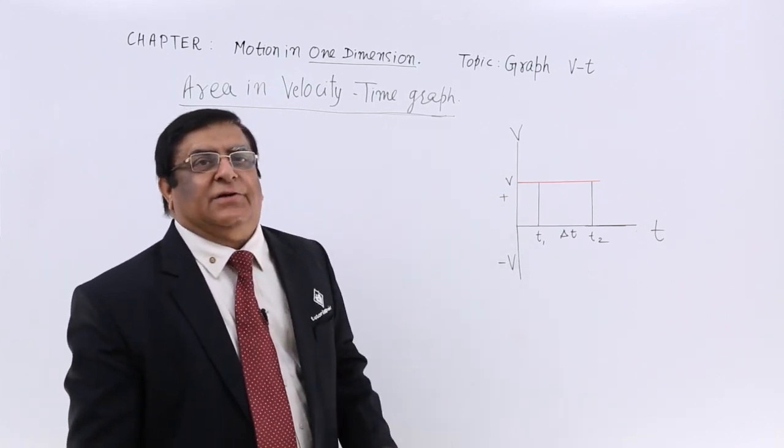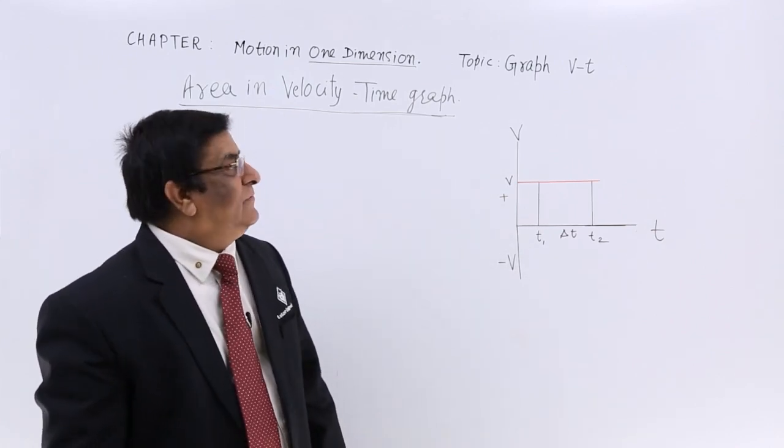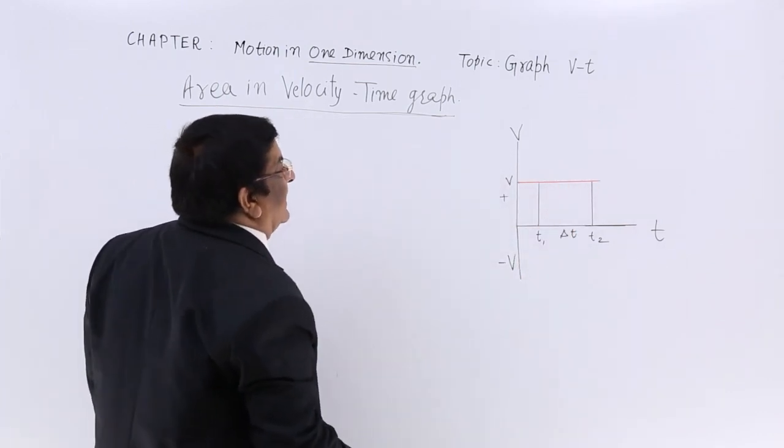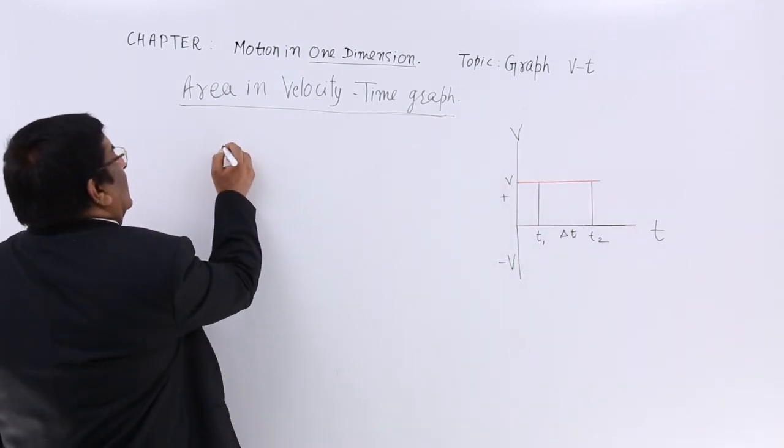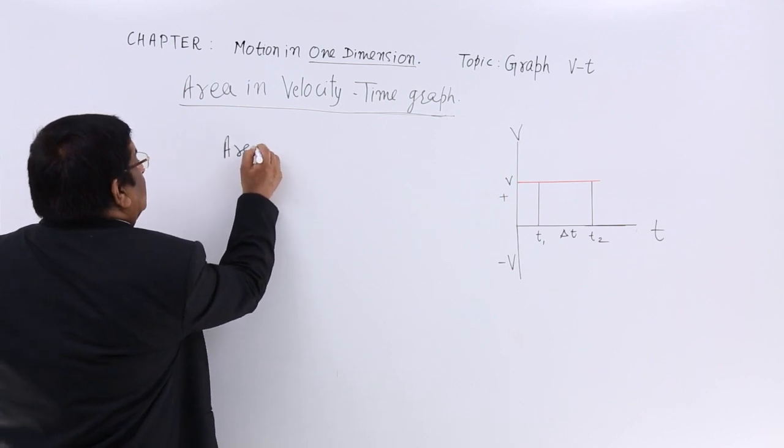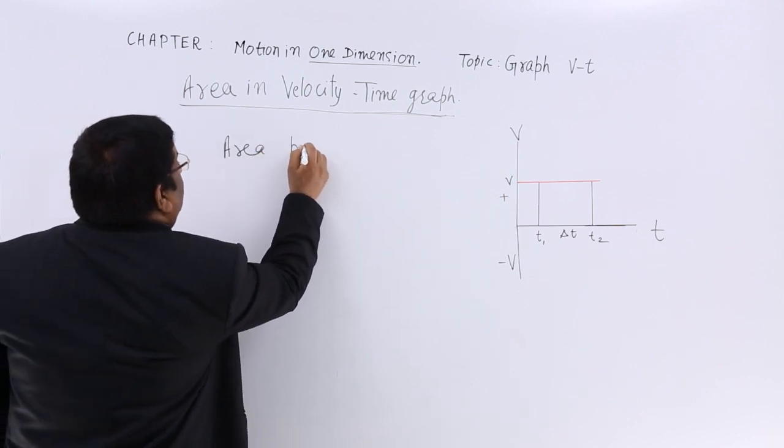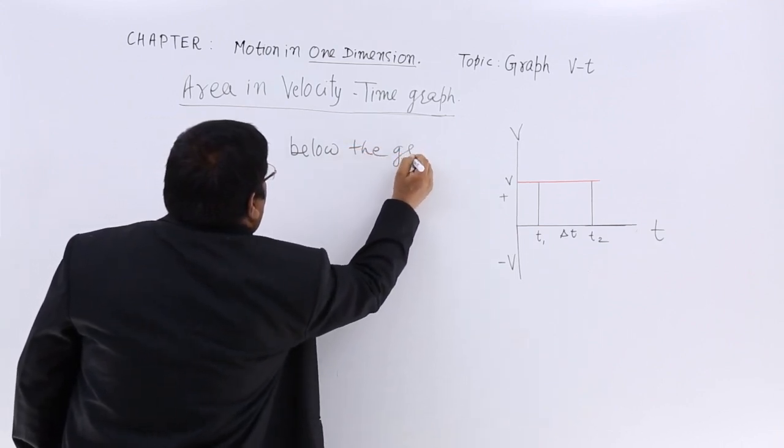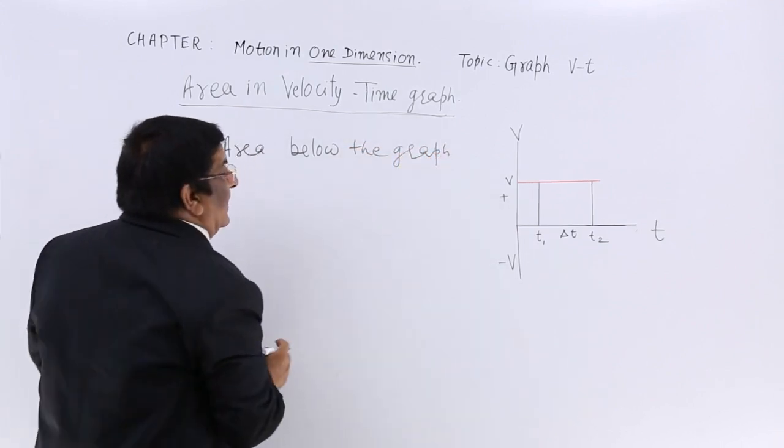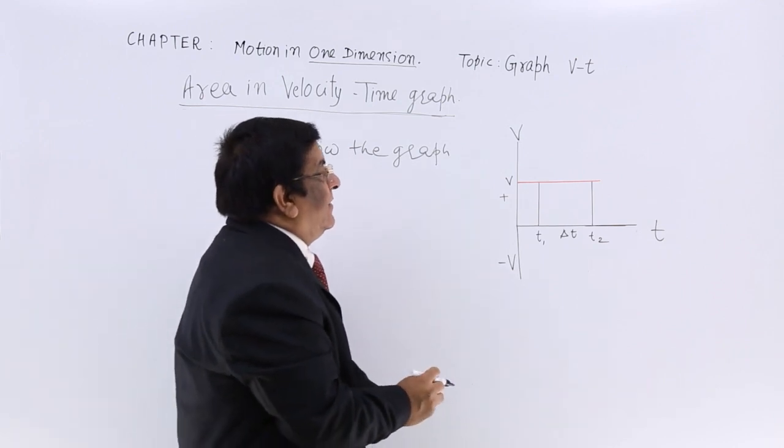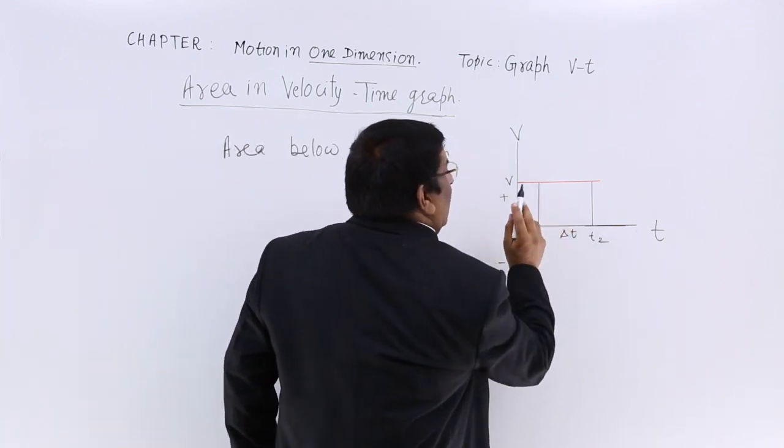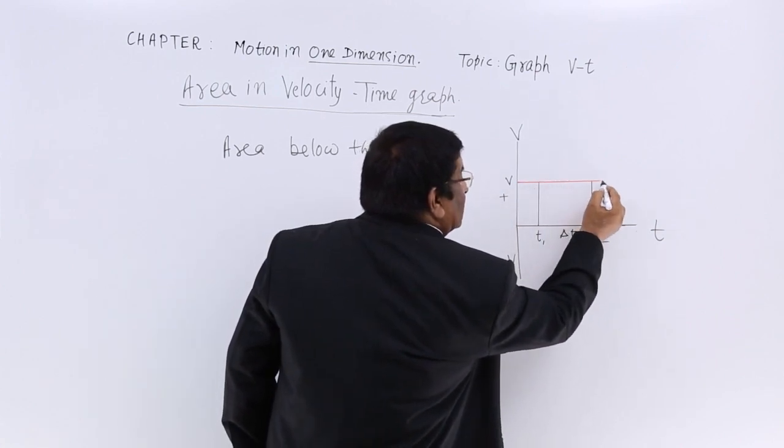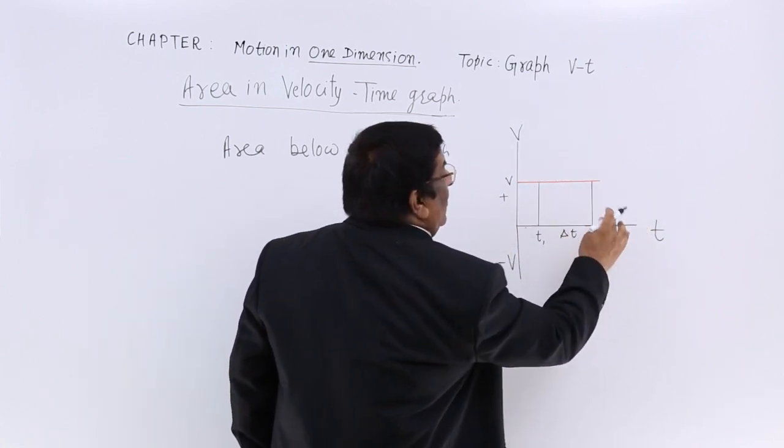Here we are studying another characteristic of velocity-time graph. This red one is the velocity-time graph and there is a new term we call it area below the graph and time axis on one side.